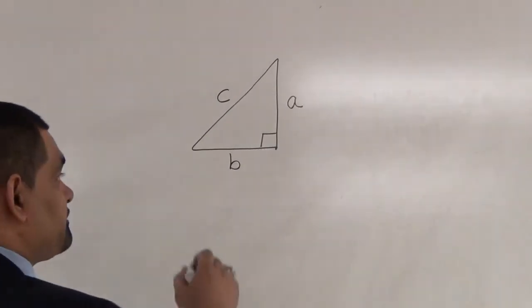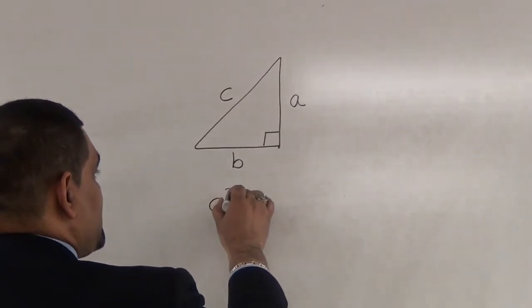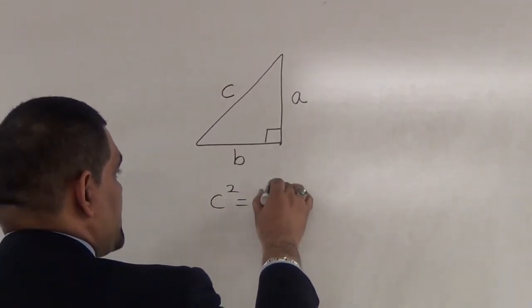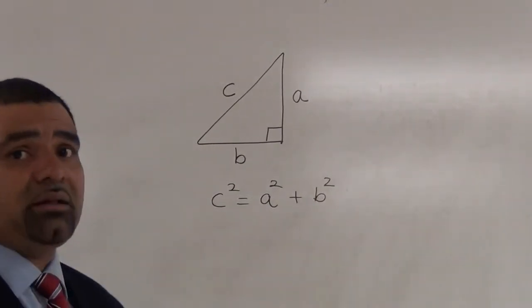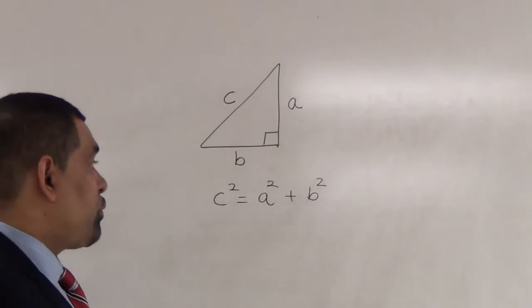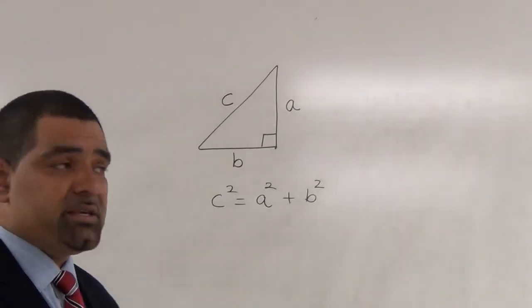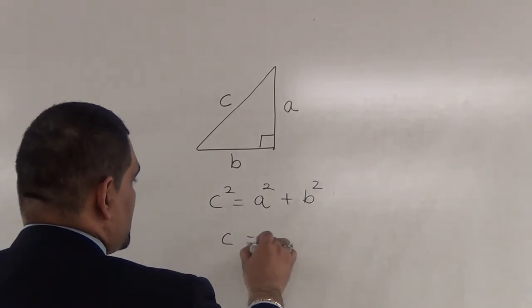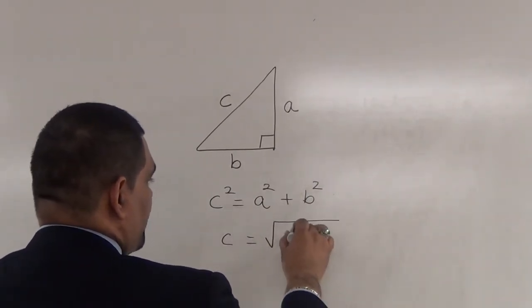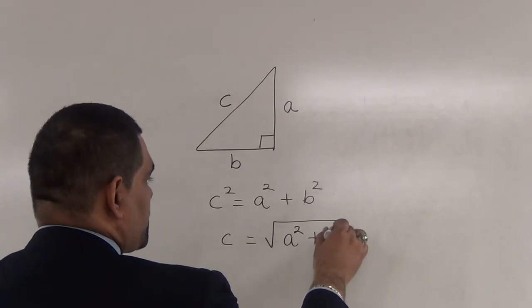Now, based on Pythagoras, he states that C squared is equal to A squared plus B squared. And this is a general formula for a right angle triangle. Now, with this formula, let's solve for C. C would equal to the square root of A squared plus B squared.